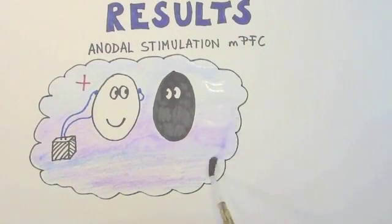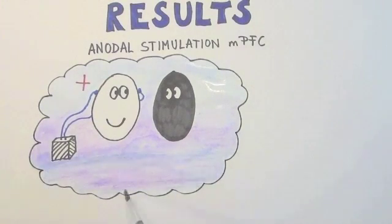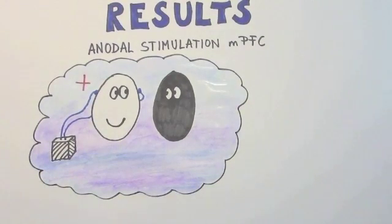This is the first time that such a causal role of the medial prefrontal cortex in regulating implicit bias has been demonstrated.